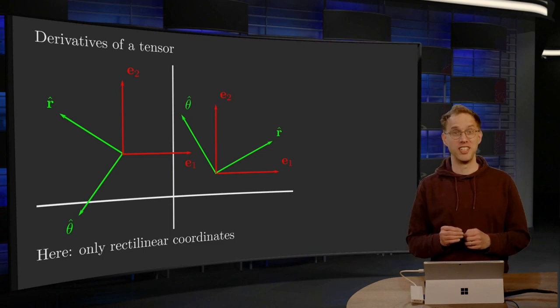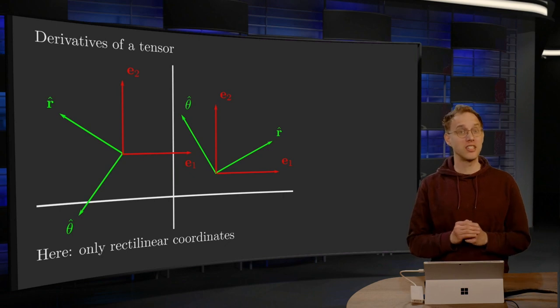Differentiation of tensors is in general a nuisance. Why? That is illustrated by this picture.